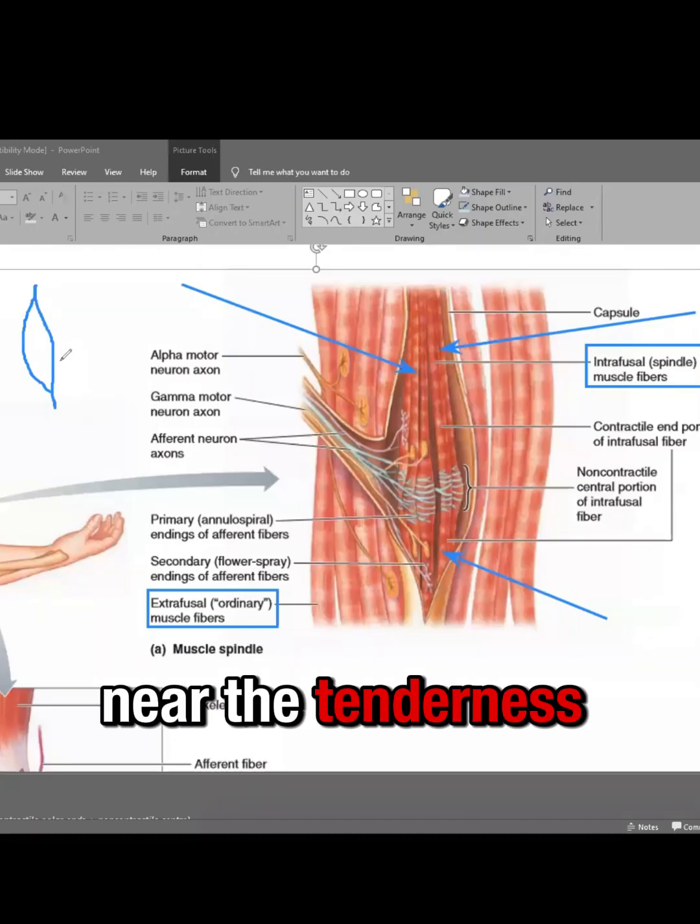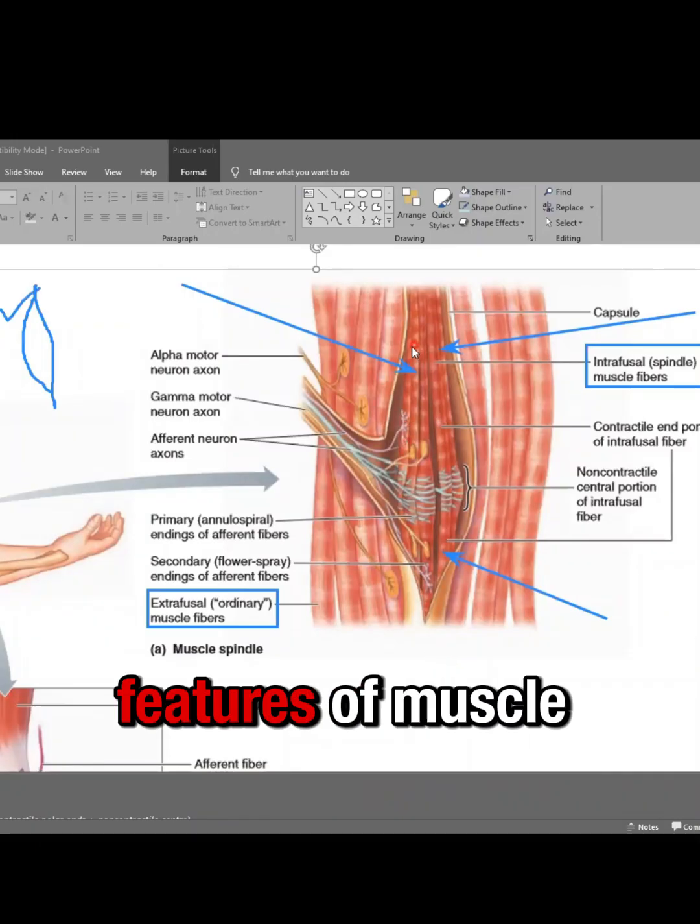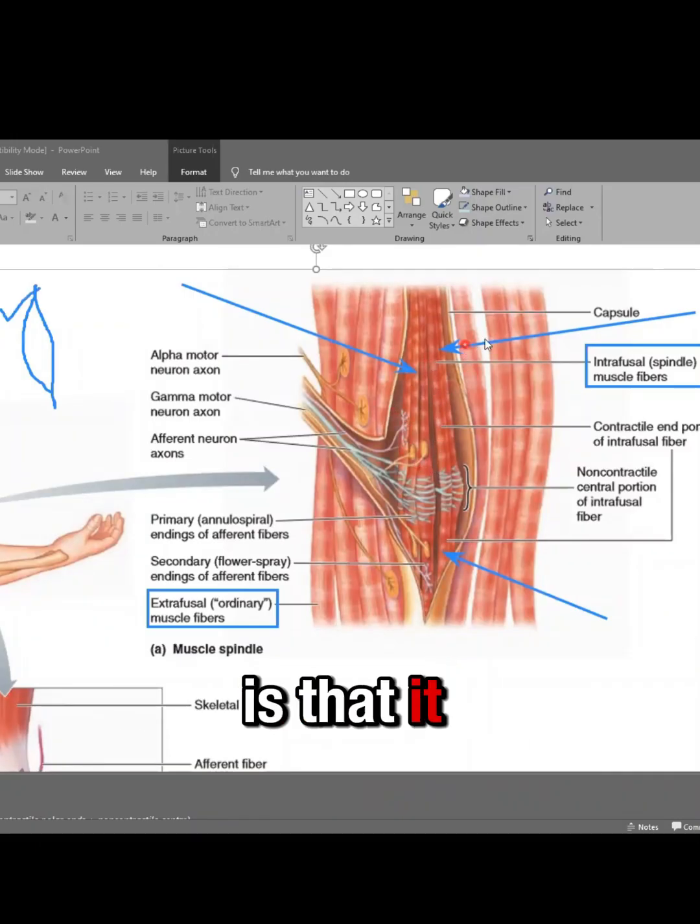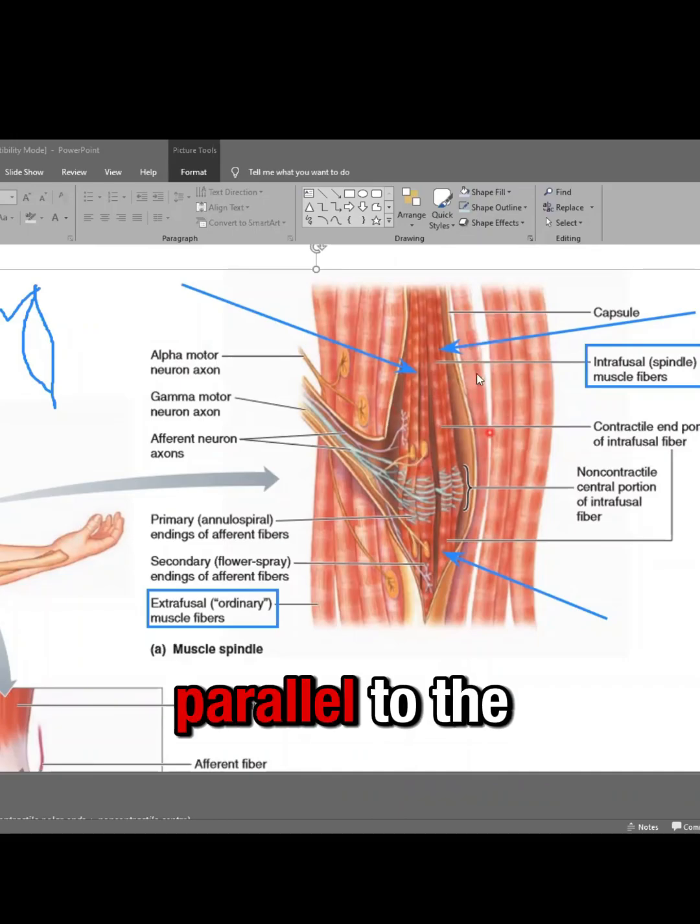Near the tendinous origins of the muscle. One of the features of muscle spindle is that it is arranged in parallel to the extrafusal fibers.